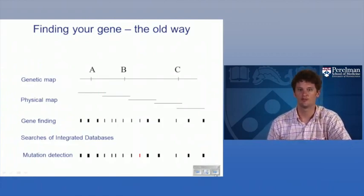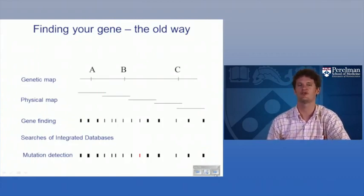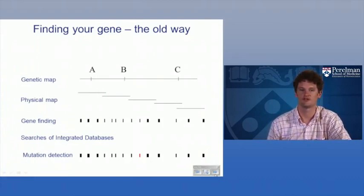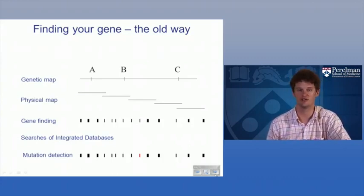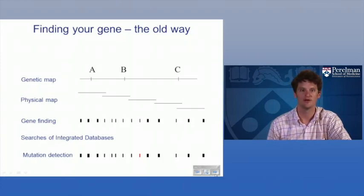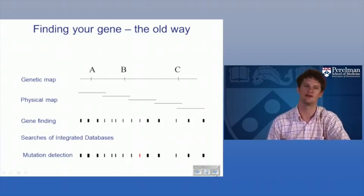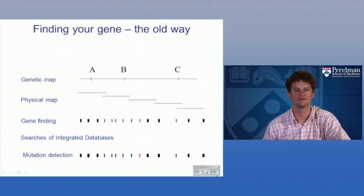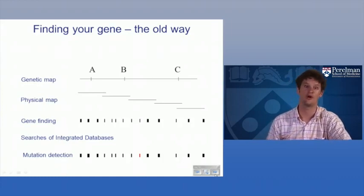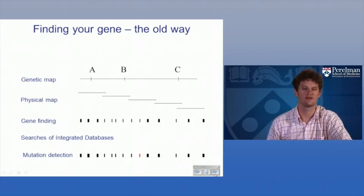Once you have your mutants breeding true, how do you find what gene is actually involved? The old way is traditional genetic mapping — cross your mutant to visible markers or molecular markers like SNPs, look at recombination frequencies, compare those to the genetic map, and place your gene on a chromosome using three-factor crosses for fine mapping. After all the mapping, you've probably narrowed your gene down to five, ten, or twenty genes, and you must look through all of those to find the one with a causative mutation.